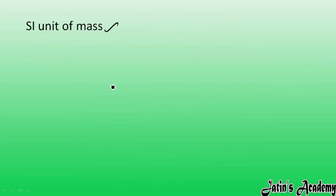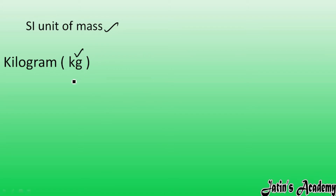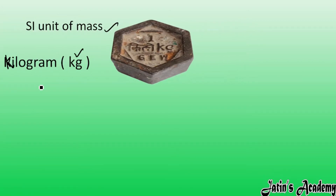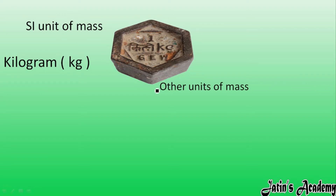Next we are having the SI unit of mass. The SI unit of mass is kilogram. The symbol is kg — both letters in small case. This is the kind of standard weight you have seen in different shops — one kg mass is there.